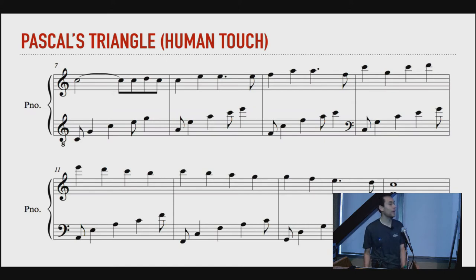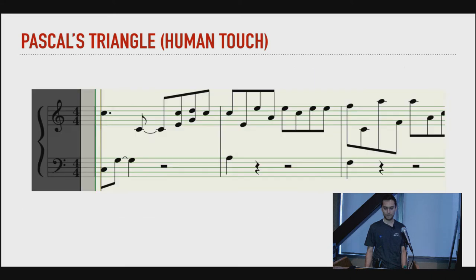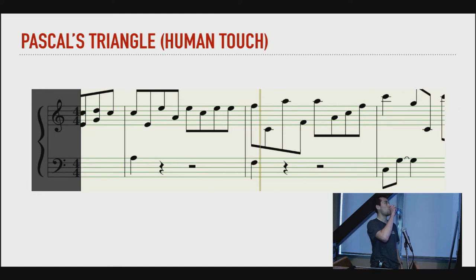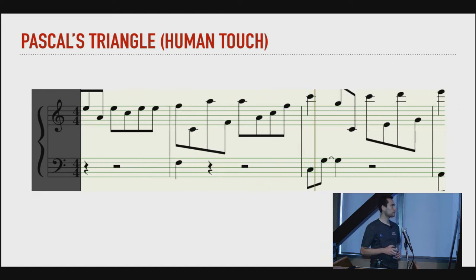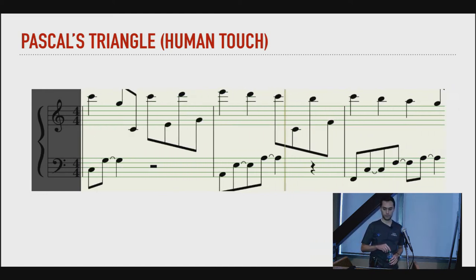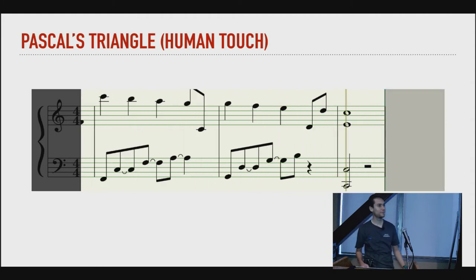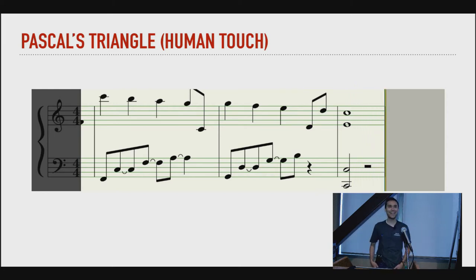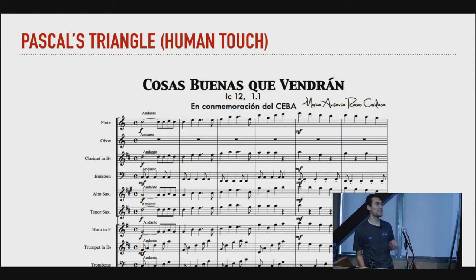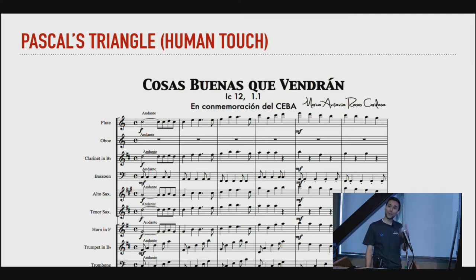Now we need to add some vertical dimension to this music. Here's an arrangement for piano for Pascal's Triangle — I want you to hear it as well. [Audio plays] We're making progress. But remember, this was a piece for an orchestra, so we needed to add all the other instruments as well.